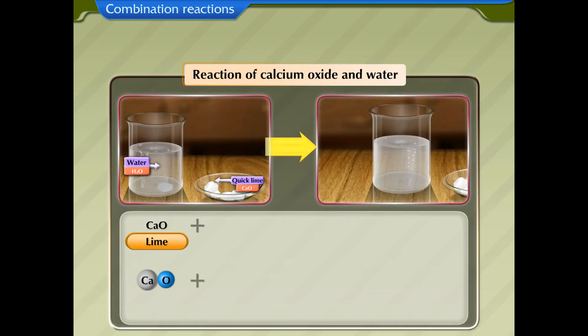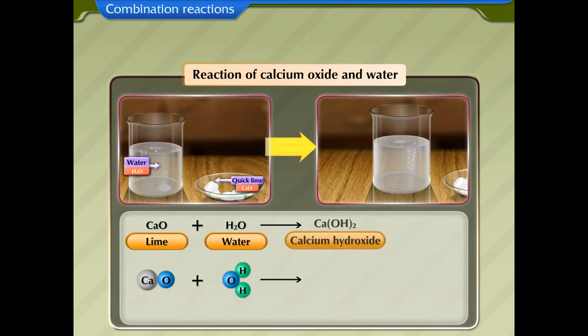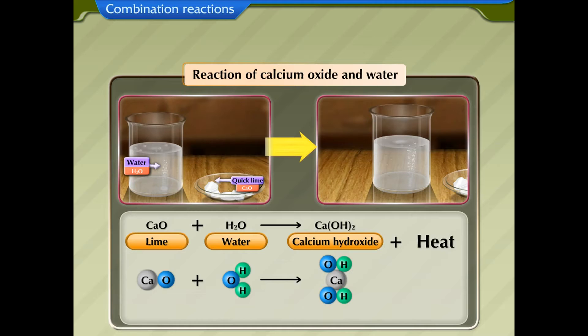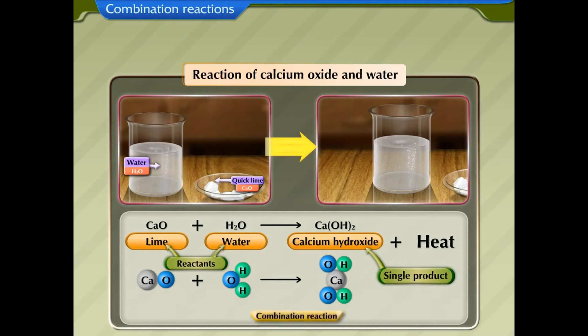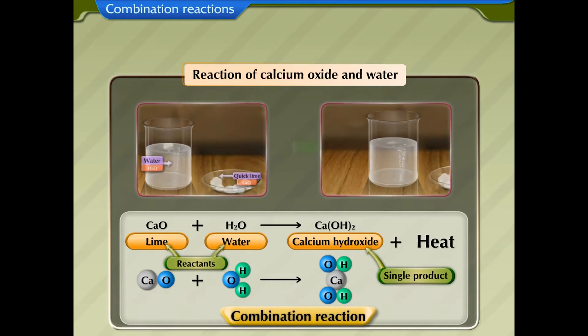The reaction between lime and water gives calcium hydroxide and the release of heat. As two reactants give a single product, it is a combination reaction.